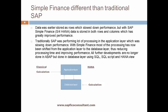How is SAP Simple Finance different from traditional SAP? Data was earlier stored as rows, which slowed down performance. But with SAP Simple Finance S4HANA, data is stored in both rows and columns, which has greatly improved performance. Traditionally SAP was performing a lot of processing in the application layer. This slowed down performance. With Simple Finance, most of the processing has now been shifted to the database layer, thus reducing processing time and improving performance.